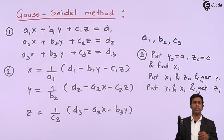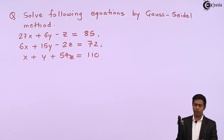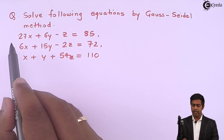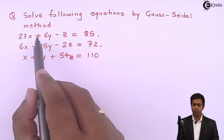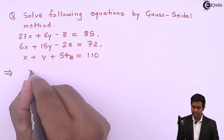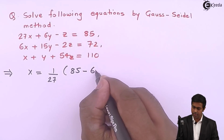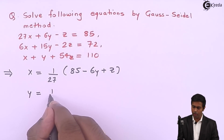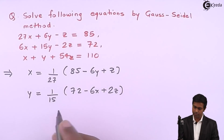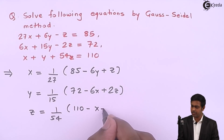To understand this concept we take an example: solve the following equations by Gauss-Seidel method. There are three equations. Observing the coefficients, the large ones are on the diagonal. We convert the equations to: x = (1/27)(85 − 6y + z), y = (1/15)(72 − 6x + 2z), and z = (1/54)(110 − x − y).